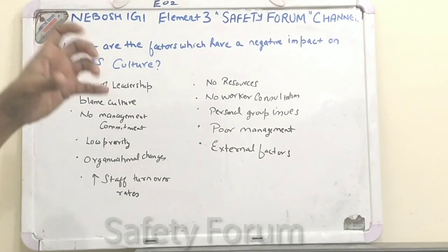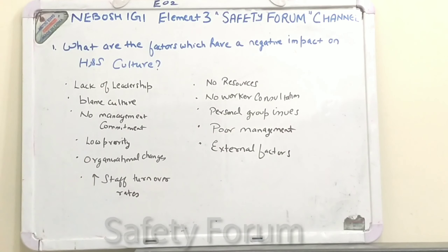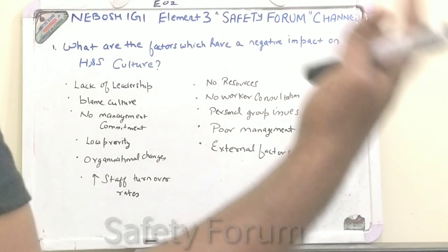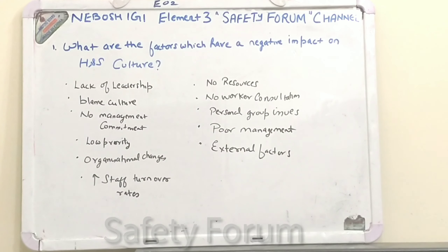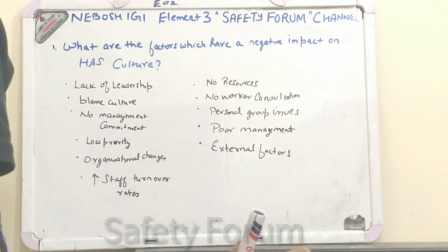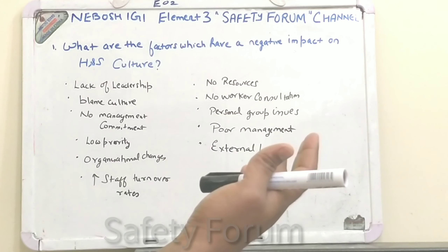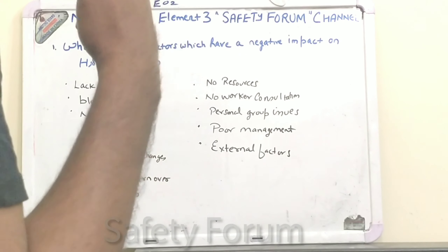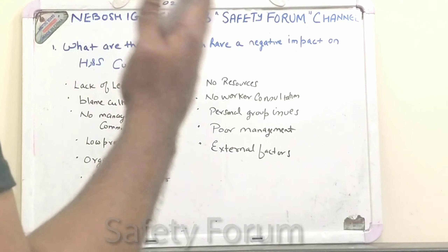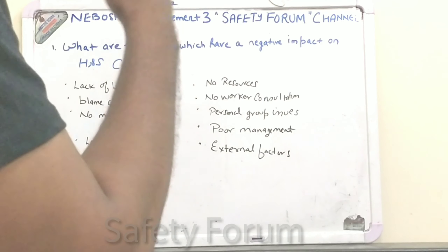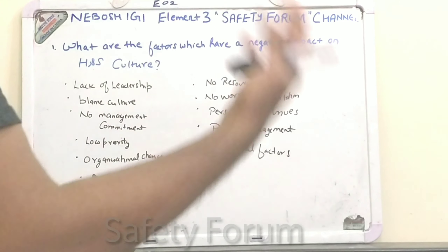Then we have low priority, which means health and safety receives lower priority than other business issues. Then we have organizational changes, like frequently or poorly communicated changes — any changes at the management level or in the top management or in your departments.